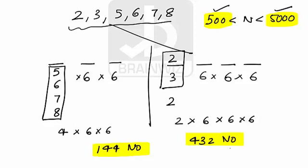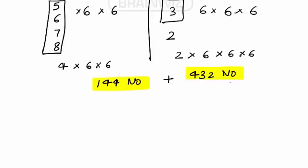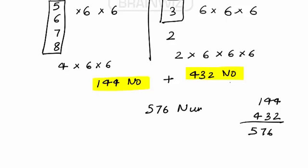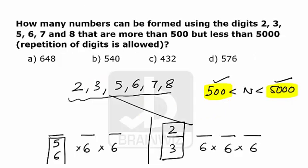Now we take the total: 144 numbers plus 432 numbers gives 576 numbers. So there are 576 numbers which are more than 500 and less than 5000. Option D is the correct answer.